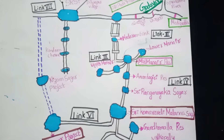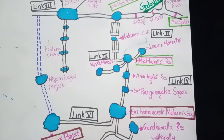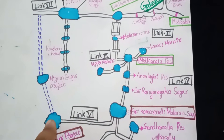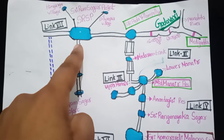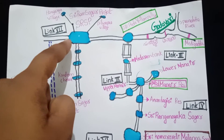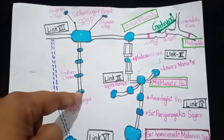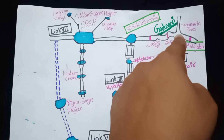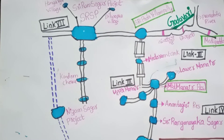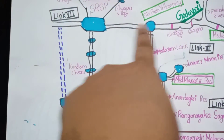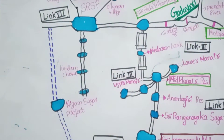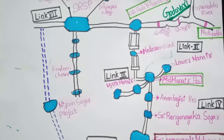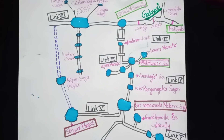Link 5 and Link 6 connect from Sri Komaravalli Mallana Sagar. Link 6 leads to what is called Nizam Sagar. This is the overall structure of the Kaleshwaram project covering all links and reservoirs.